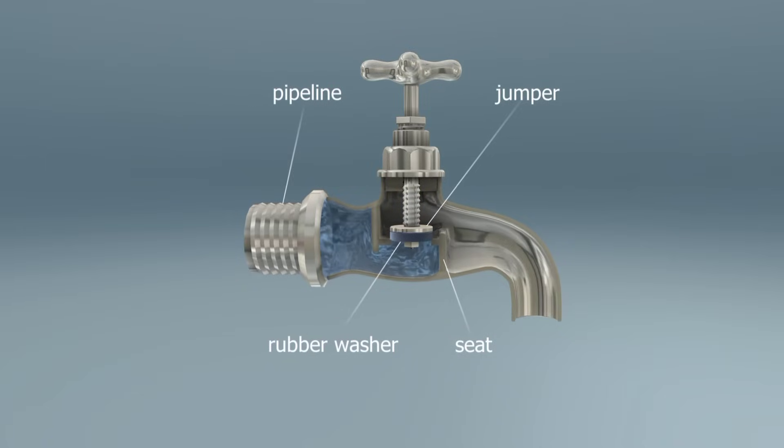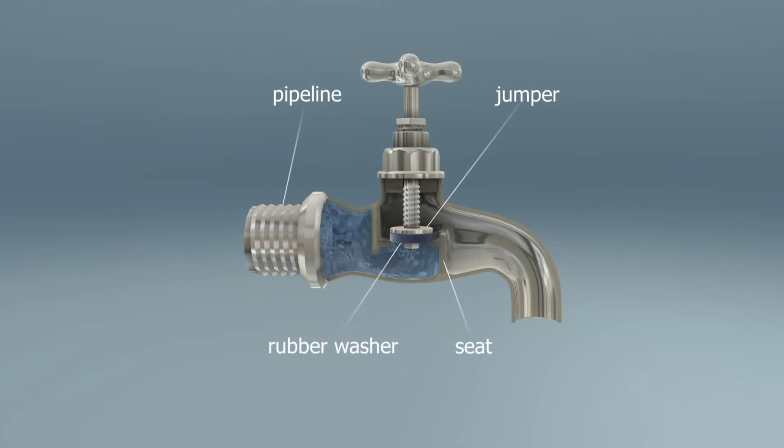When you turn off the tap, the jumper goes down again onto the seat, cutting off the flow of water.